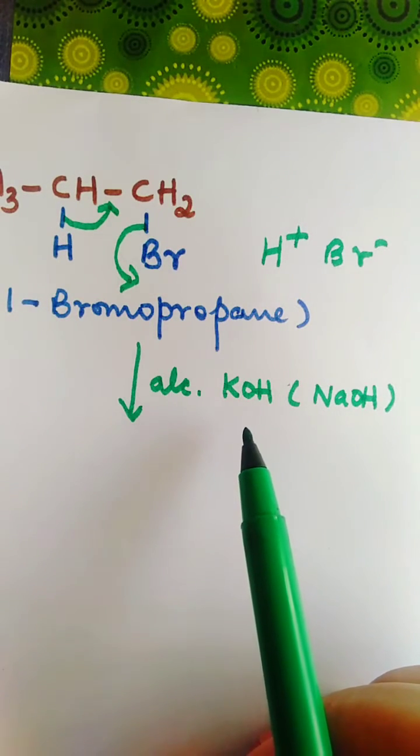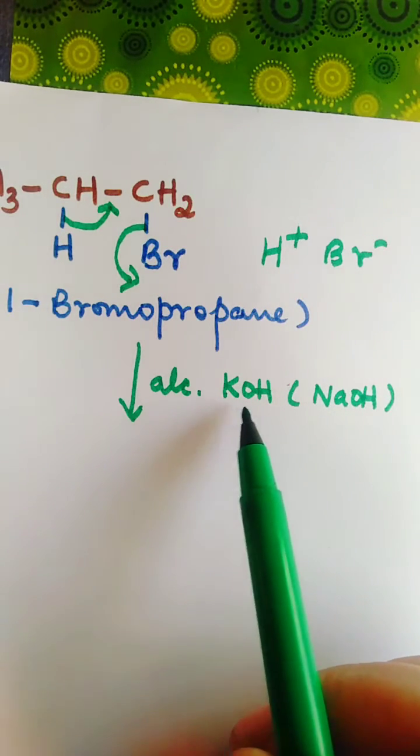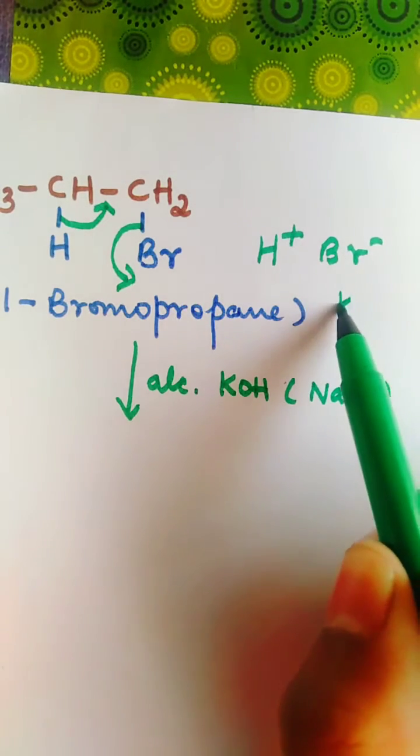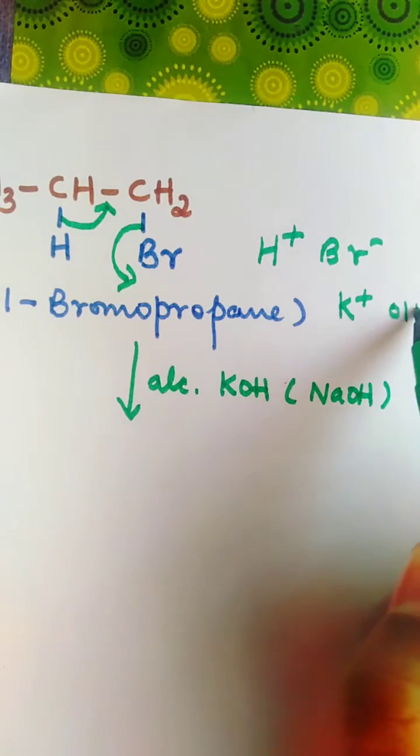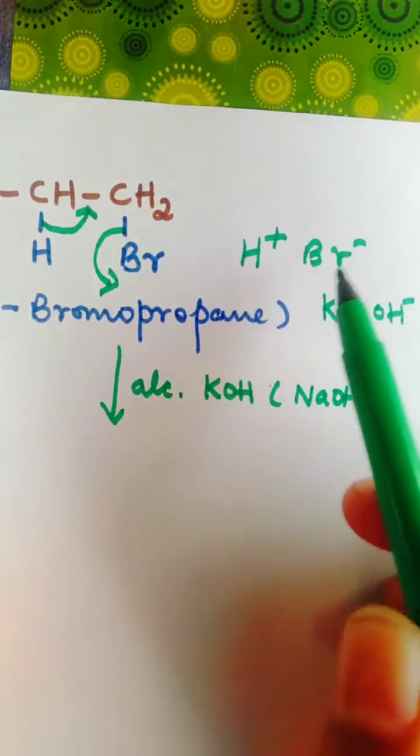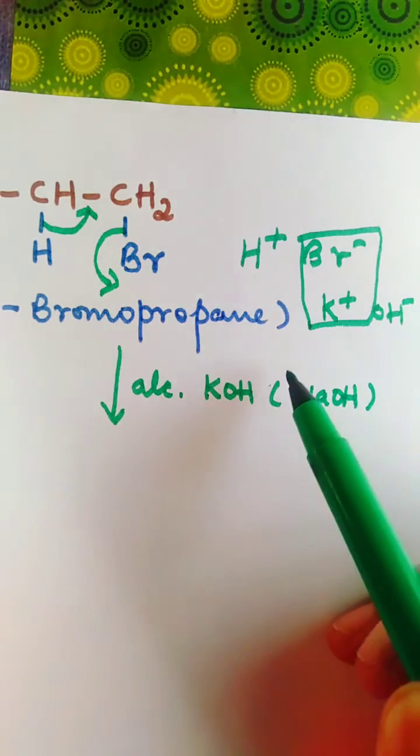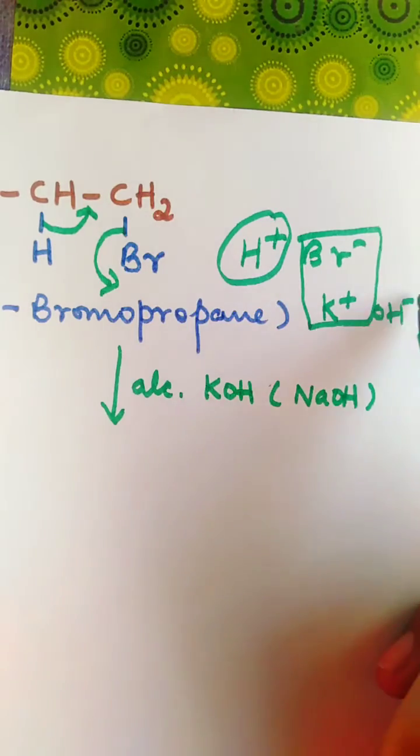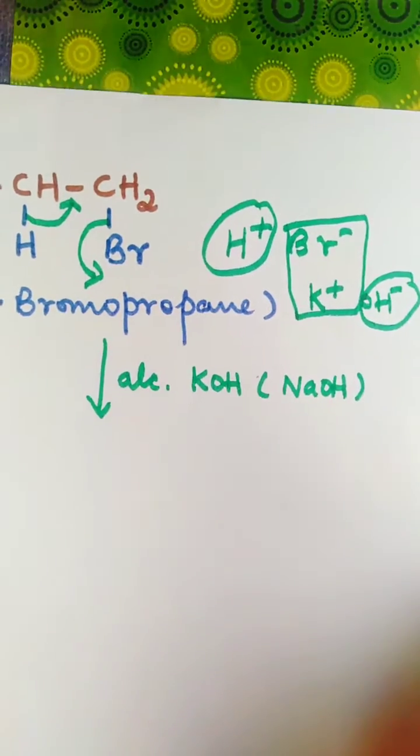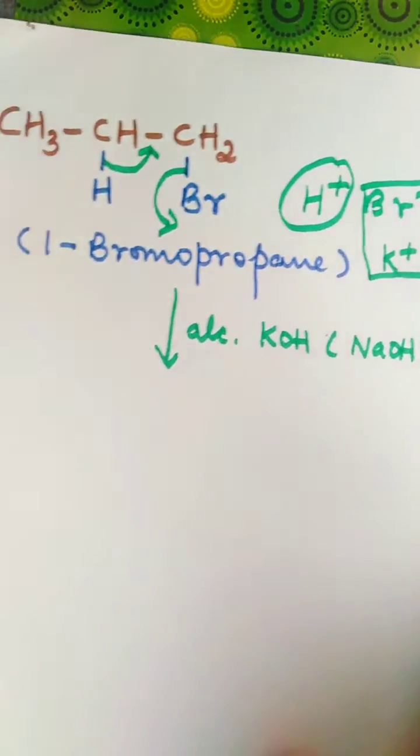From this KOH, we have K+ and OH-, so K+ reacts with Br-, and H+ with OH-. Then what are the products?